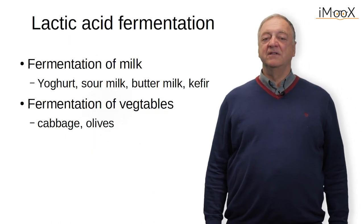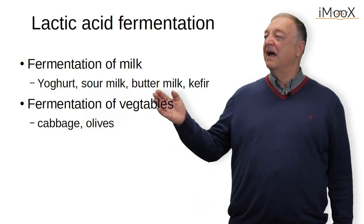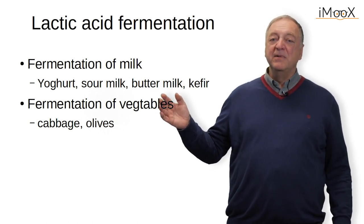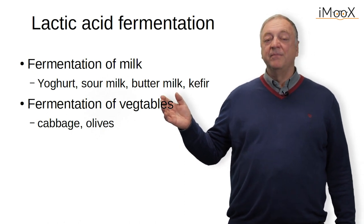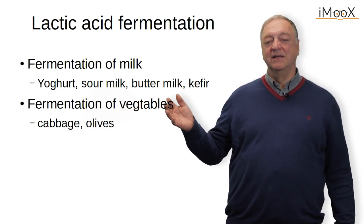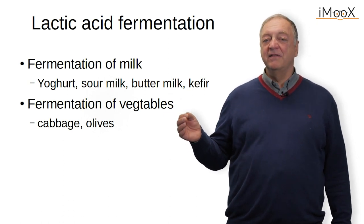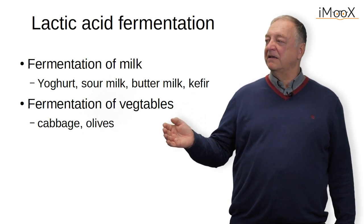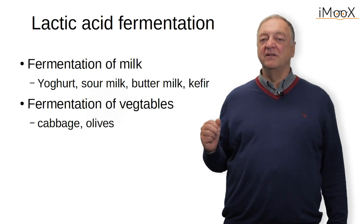We have a series of possibilities for lactic acid fermentation, mostly from milk. From milk we can produce yogurt, sour milk, kefir, and buttermilk can be fermented. Or we can ferment vegetables also with lactic acid producing bacteria, and the examples that I will discuss are the fermentation of cabbage and the fermentation of olives.